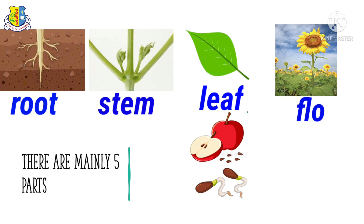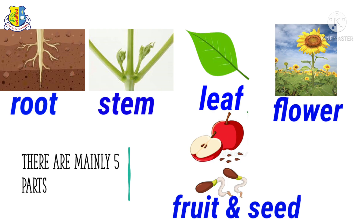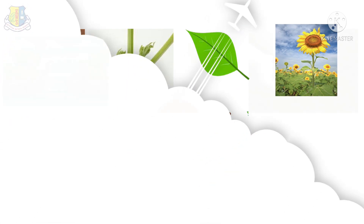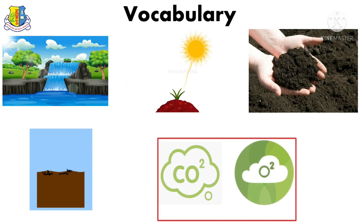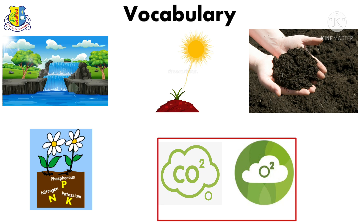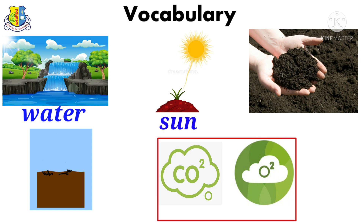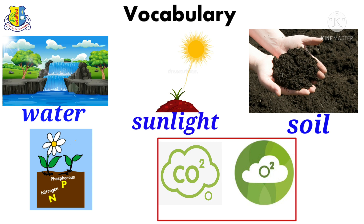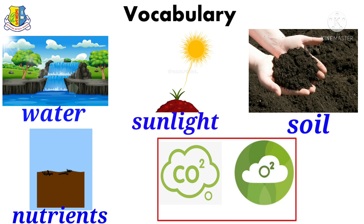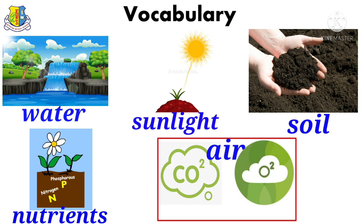Now let's see the vocabulary for the basic needs of plants: water, sunlight, soil, nutrients, and air. Air is a mixture of carbon dioxide and oxygen.